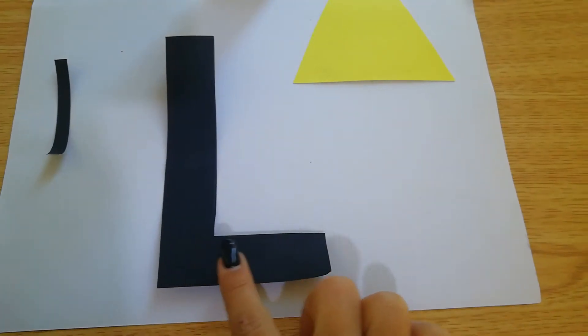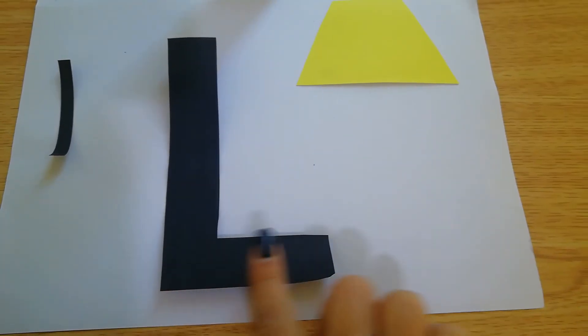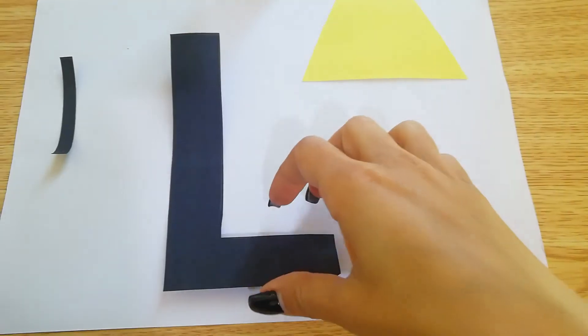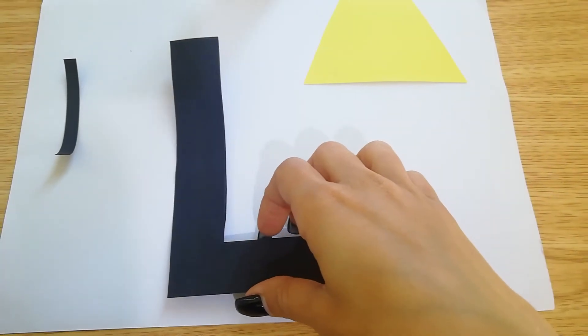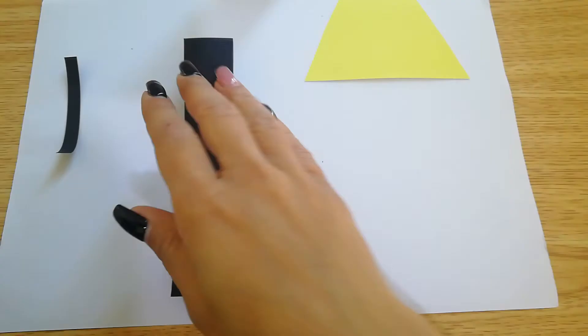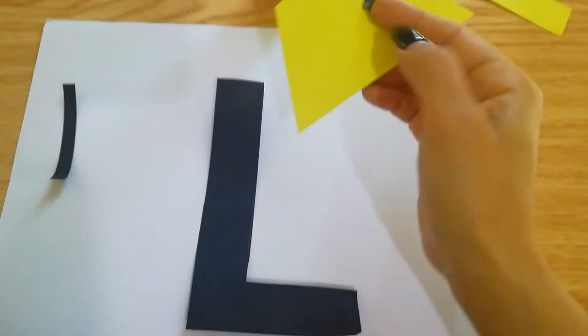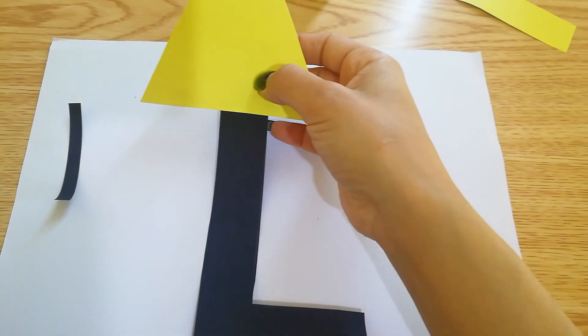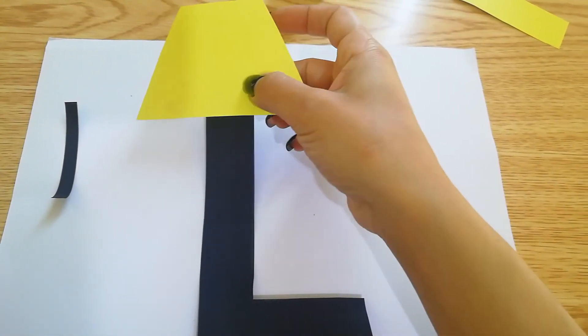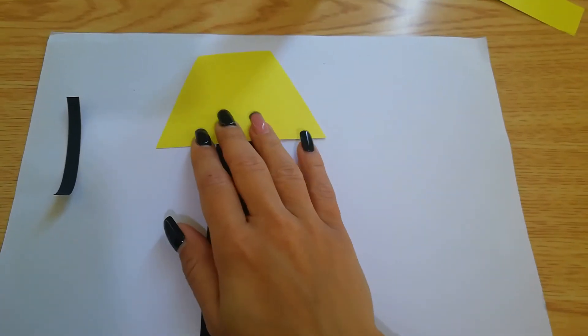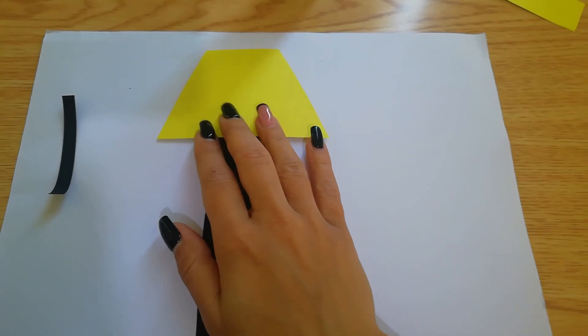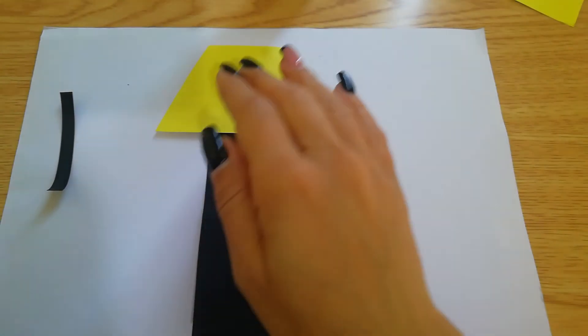We made L with a black cardboard or black paper. We're going to place it here. And then, look, I made this one in yellow to represent the light that comes out of the lamp.